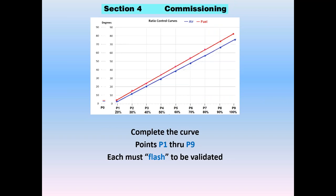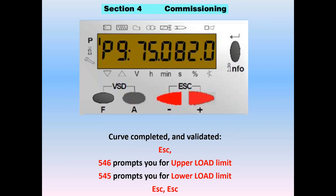Once the curve is complete — P1 through P9 — each point must flash to be validated. If you lose your flame, your load, or your burner turns down for any reason, all your data is retained, but points are not validated until they flash with that setting in there. You must flash on P8, P9, and every single point in your curve in either direction before you leave, so all points are valid combustion points.